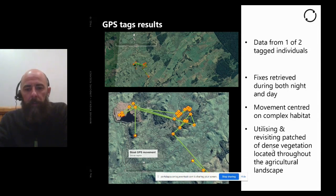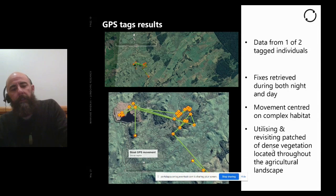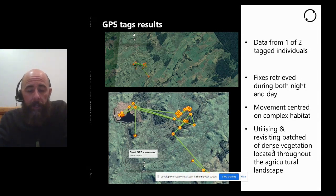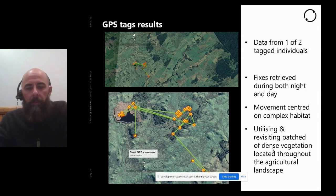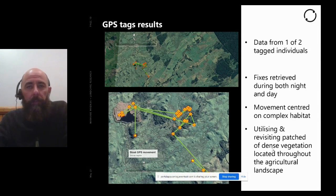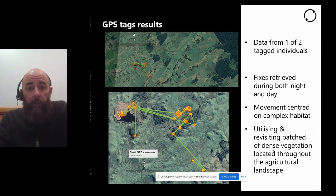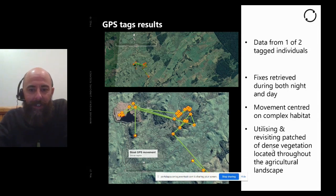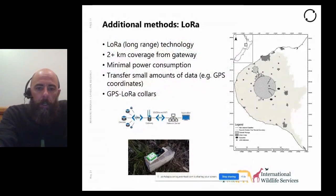We noticed the individual was active across 24 hours — in the morning and evenings, but also sometimes in the middle of the day and middle of the night. Stoats can be traditionally very nocturnal, but if there's high density and abundance of ferrets, they can be pushed to be more diurnal. We were noticing that at least this one individual was active multiple times a day.